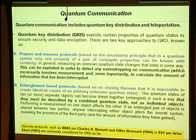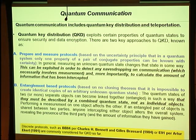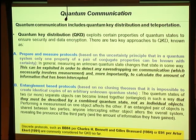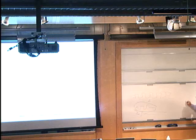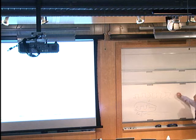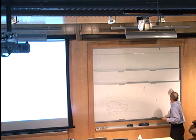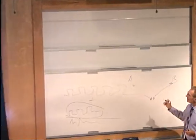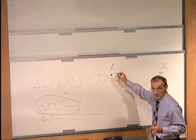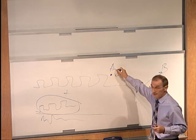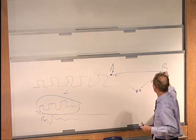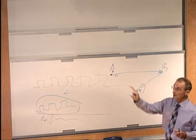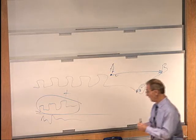The second principle is based on the no-cloning theorem: it is not possible to produce identical copies of unknown quantum states. These two principles are related. When we combine entangled states distributed to two parties, there is a source of entangled photons — one goes to Alice, one goes to Bob. The source could be local to Alice, and the second photon is transmitted to Bob.